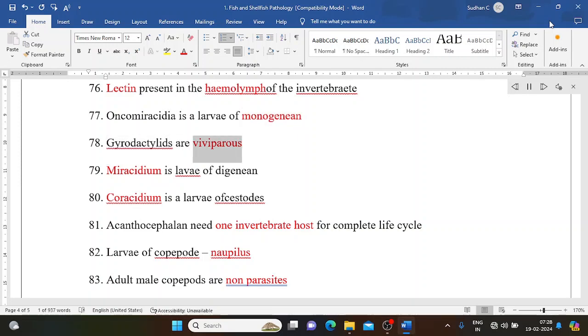Gyrodactylids are viviparous. Miracidium is larvae of digenean. Coracidium is a larvae of cestodes. Acanthocephalan need one invertebrate host for complete life cycle. Larvae of copepod is nauplius.